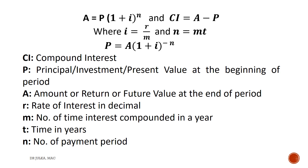If we want to calculate the present value at the beginning of the period, we can use the formula: P equals A multiplied by 1 plus I raised to the power minus N.